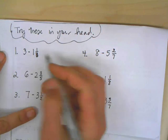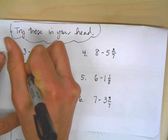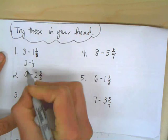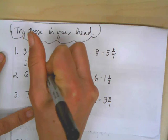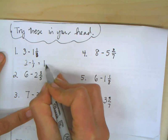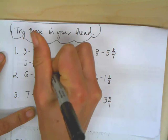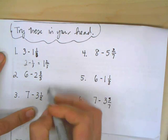Okay, so the first one is 3 minus 1 and 1 third. So once again, first whole numbers, 3 minus 1 is 2. 2 minus 1 third. So I know I'm taking away from the 2, so I have less than 2 now. So I have 1 and 1 plus 2 thirds will get me back to my original 2 wholes.